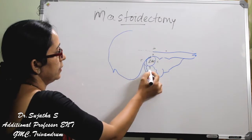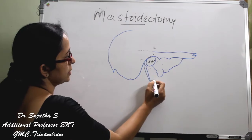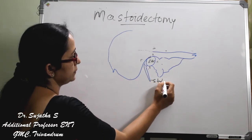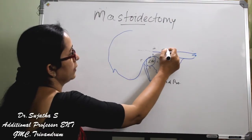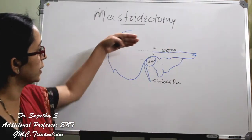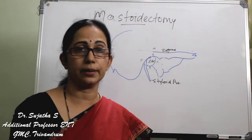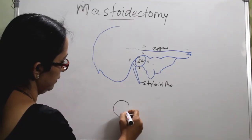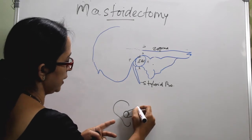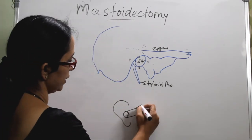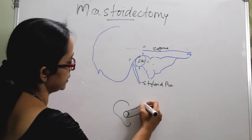The external auditory canal has superior, inferior, anterior and posterior walls. The styloid process is also visible here. The root of the zygoma extends posteriorly as the supramastoid crest or the superior temporal line. First comes the pinna with the external auditory canal — outer cartilaginous part and then the bony part. The medial end of the external auditory canal is the tympanic membrane.